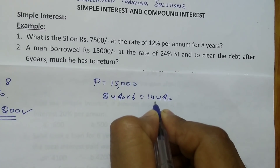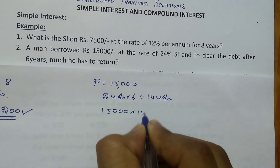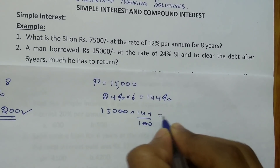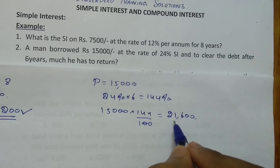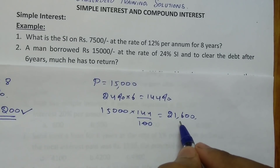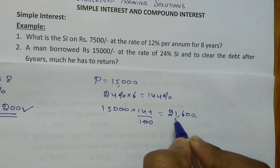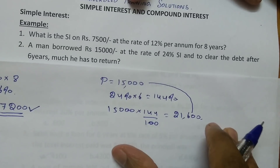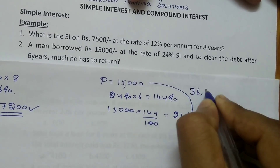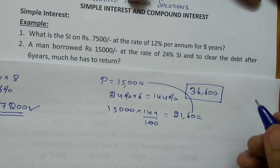He borrowed 100% which is Rs.15000, and he is paying 144% as the total simple interest. So 15000 into 144 divided by 100 gives you Rs.21600. He borrowed Rs.15000 and has to pay Rs.21600 as total interest. So the total amount he has to return is 15000 plus 21600, which is Rs.36600 at the end of 6 years.